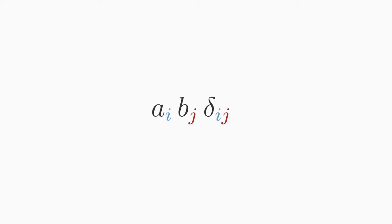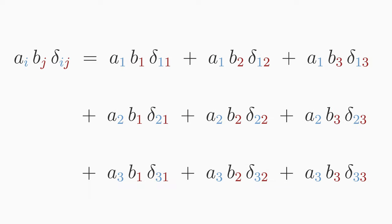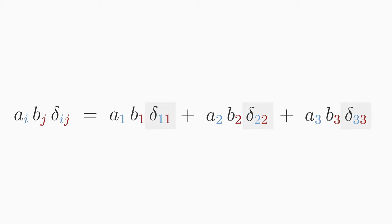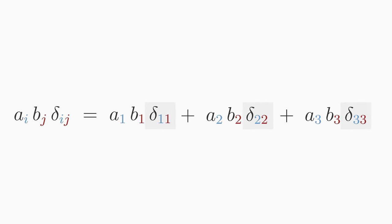We can write out the double summation over i and j just for practice. In other words, we have to go through all possible combinations of the indices i and j. So we get a1 b1 delta 1 1 plus a1 b2 delta 1 2 and so on. Because of the definition of Kronecker delta, only three components of 9 in total are not zero, where i equals j. So you may omit all summands with unequal indices. Using the definition of Kronecker delta, you get the scalar product you are familiar with.